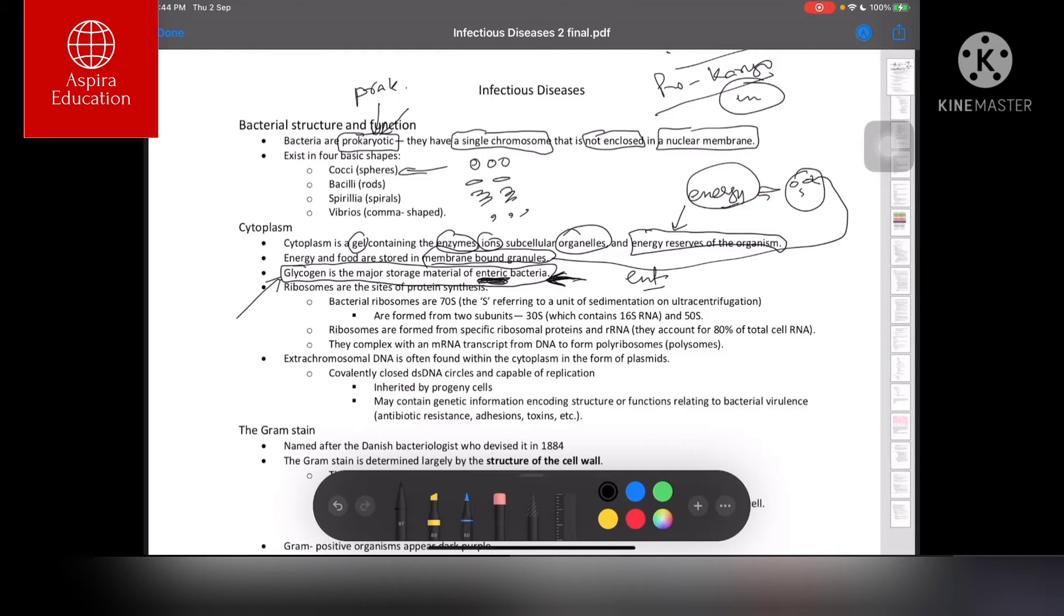When asked what portion of chemicals enteric bacteria utilize for energy storage, the answer will be glycogen, not glucose, not proteins—it will be glycogen.